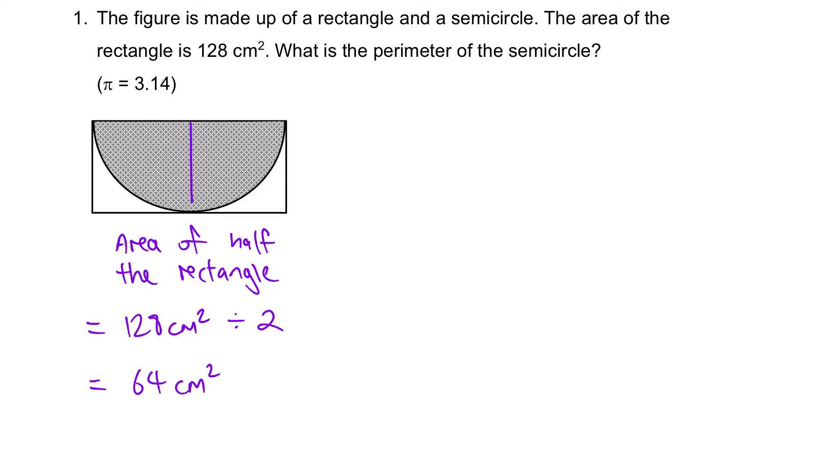Next step, let's figure out what is the dimension here, which is the radius. Next, we can do radius of semicircle. What is the radius? This times this will give you 64. So we know that it must be 8cm, because 8 times 8 will give you 64. So we know this is 8cm.